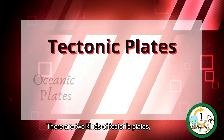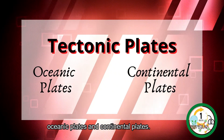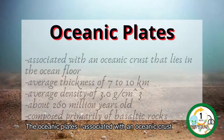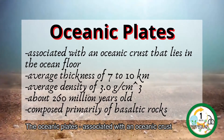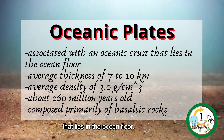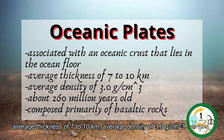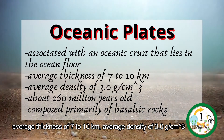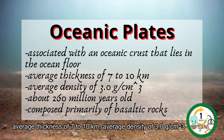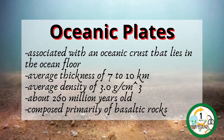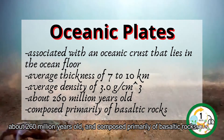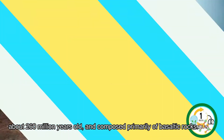There are two kinds of tectonic plates: the oceanic plates and continental plates. The oceanic plates are associated with an oceanic crust that lies on the ocean floor, with an average thickness of 7 to 10 kilometers, average density of 3 grams per cubic centimeter, about 260 million years old, and composed primarily of basaltic rocks.